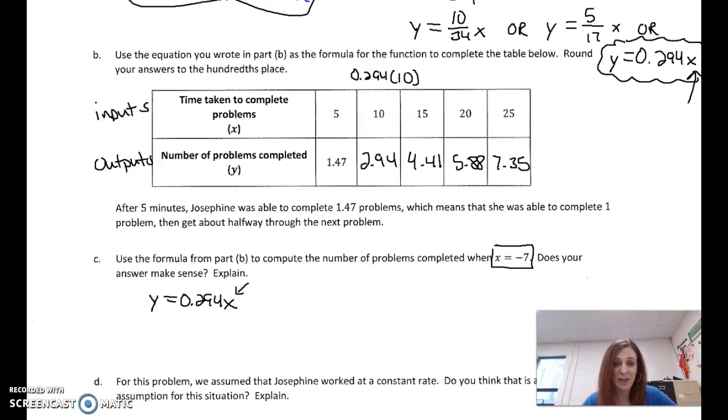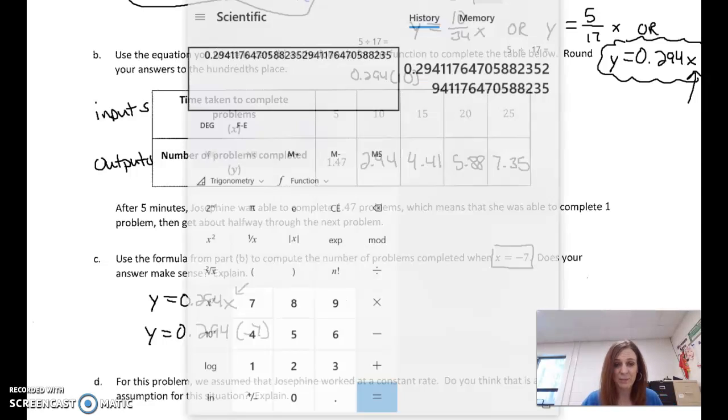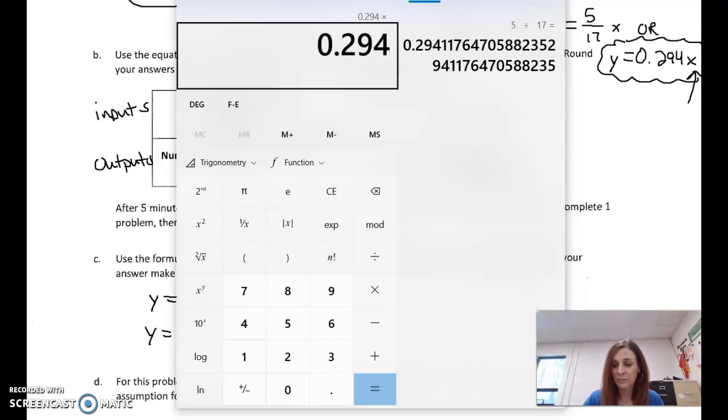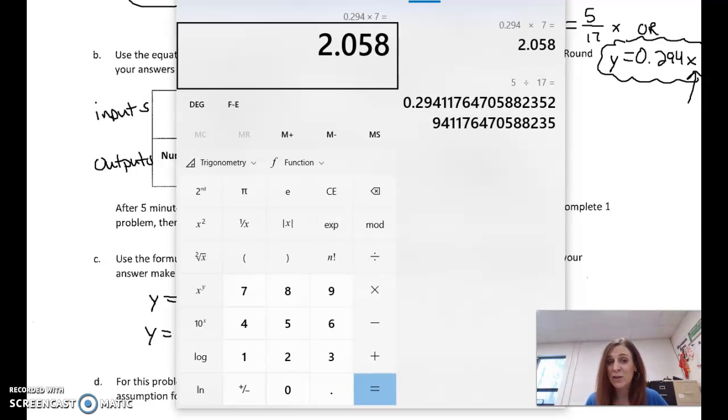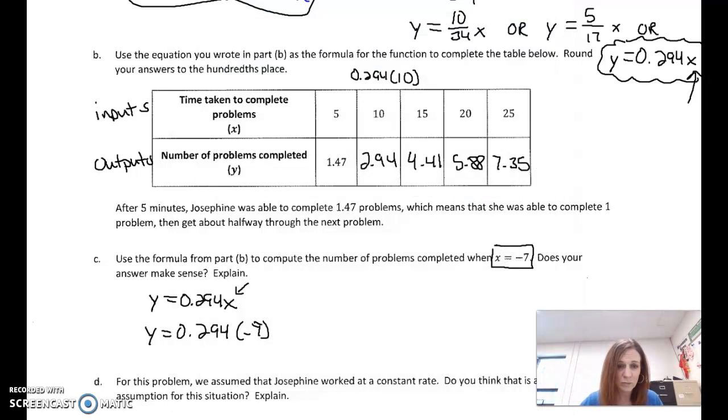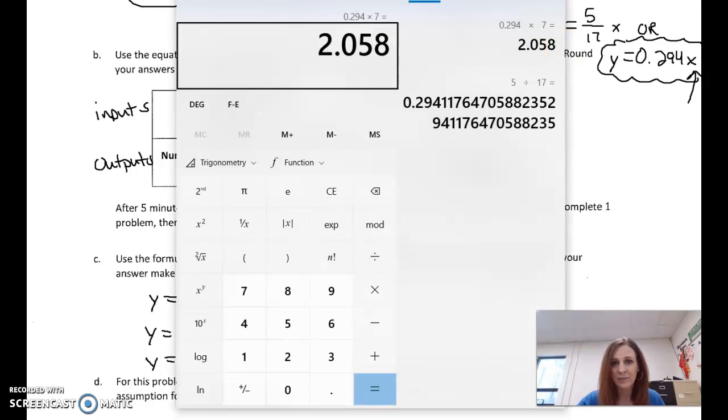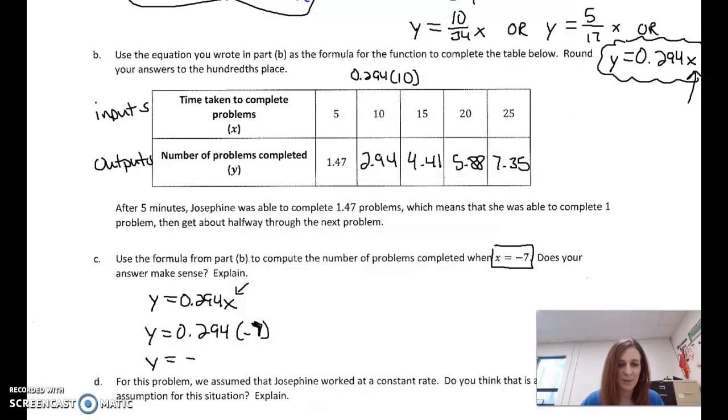To complete the number of problems when x equals negative 7. Alright, so I'm going to take negative 7 and I'm going to plug it in here. And my y is going to equal 0.294 times negative 7. So I'm going to do times it by 7, 2.058, but I know a positive times a negative is going to be negative. So y is going to equal negative 2.058.